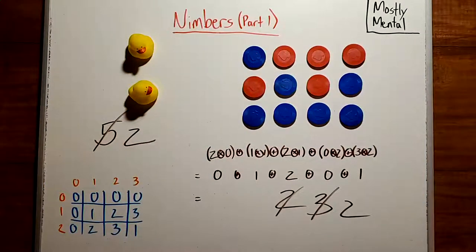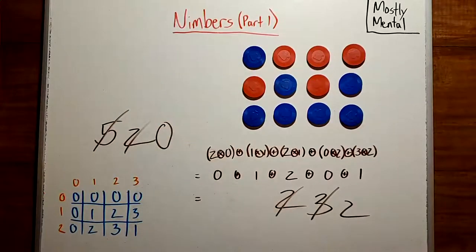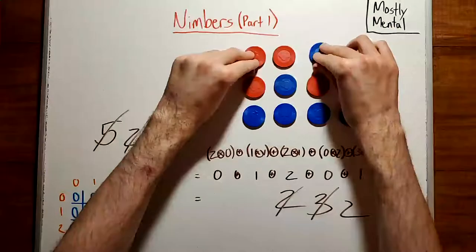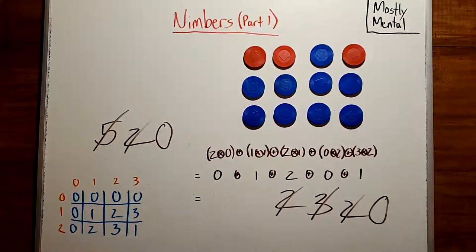And then if the opponent removes the last two counters, bringing this down to zero, we can flip over these four coins, bringing this down to zero, and leaving no legal moves, which means we win.